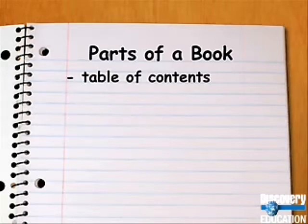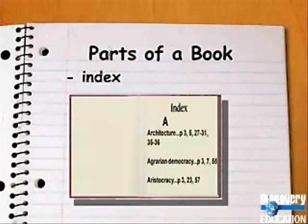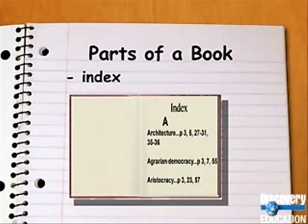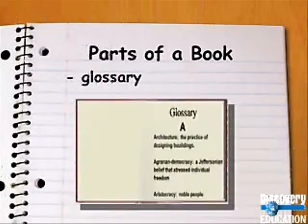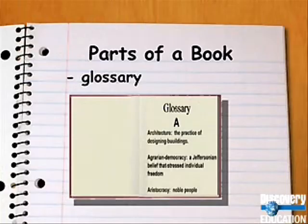The table of contents is located in the front of the book and it lists the chapter titles. Books often have an index in the back of the book that you can look through to find specific information. Sometimes there is a glossary located in the back of the book that provides the definitions of words used in the book.